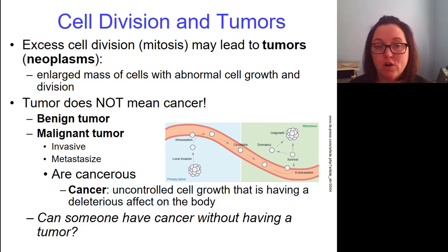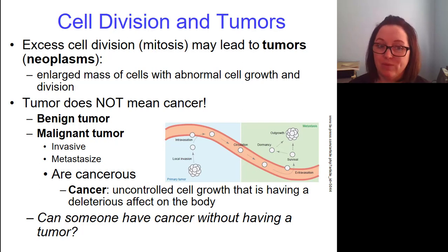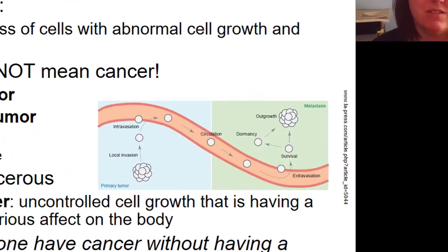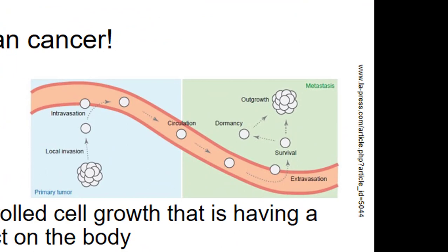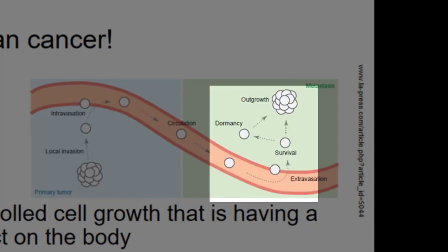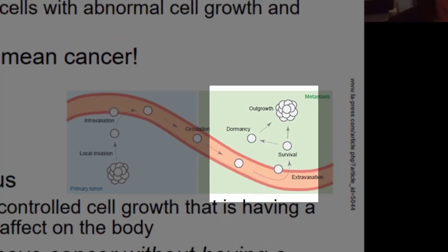Benign tumors are not harmful, and almost all of us have benign tumors. Malignant tumors are the bad ones. Malignant tumors can be invasive, meaning they're pressing into other tissues and causing other organs to malfunction, or they metastasize. To metastasize means that the malignant tumor is shedding cells, and those cells are traveling through a body fluid to a new location where they start to replicate and grow a secondary tumor.